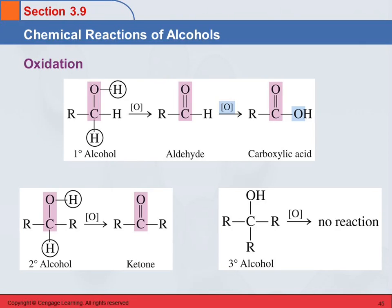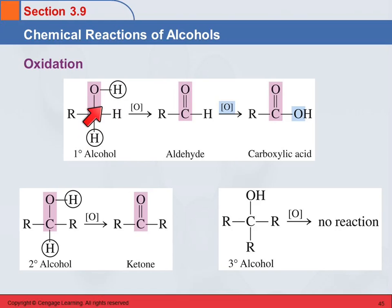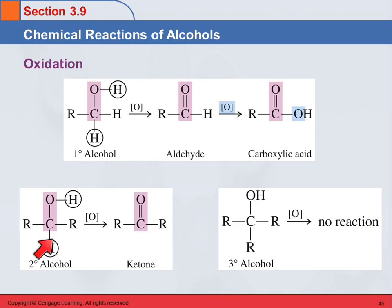Here are our generic equations. For a primary alcohol — the carbon with the hydroxyl group has one alkyl group on it — we take this hydrogen and one hydrogen from that carbon, and we get an aldehyde, which can be oxidized further. For a secondary alcohol, it has one hydrogen on that carbon; we take that hydrogen and the one from the hydroxyl group, form a double bond with the oxygen, and end up with a ketone. For a tertiary alcohol, nothing happens — no hydrogen on that carbon.